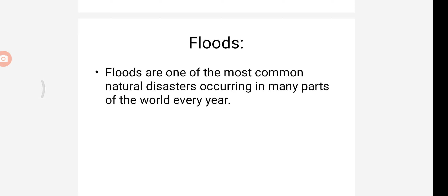Floods. Floods refer to the inundation of a large part of land, which otherwise remains dry, by water for some duration of time. Floods are one of the most common natural disasters occurring in many parts of the world every year. Floods occur due to heavy rainfall within a short duration of time in a particular region, which causes the rivers and streams to overflow. Since most of the precipitation occurs within a span of 2 to 3 months during the rainy season, most floods occur during that time.